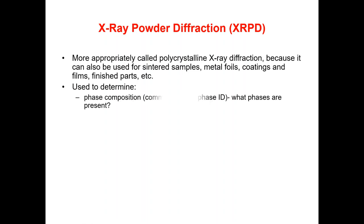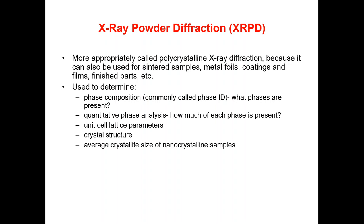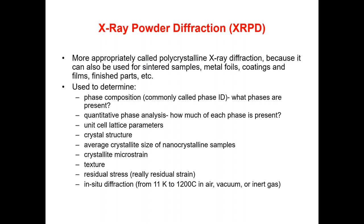XRPD is used to determine phase compositions — commonly called phase ID — that is, what phases are present in the sample. It can also be used for quantitative phase analysis, to find out how much of each phase is present, as well as unit cell lattice parameters, crystal structures, average crystallite size of nanocrystalline samples, micro-strains, texture, residual stress, and in-situ diffraction from 11 Kelvin to 1200°C in air, vacuum, or inert gas.